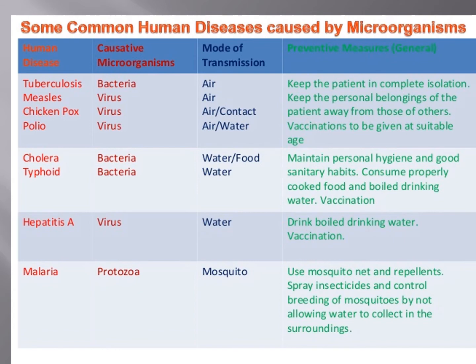Cholera and typhoid: in both cases the causative agent is bacteria, and the mode of transmission is water and food. Preventive measures include maintaining personal hygiene and good sanitary habits, consuming properly cooked food, boiling drinking water, and vaccination. Hepatitis A: causative agent is virus, mode of transmission is water. Preventive measures include drinking boiled water and vaccination.